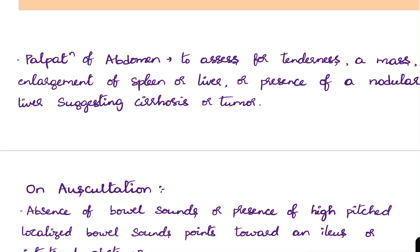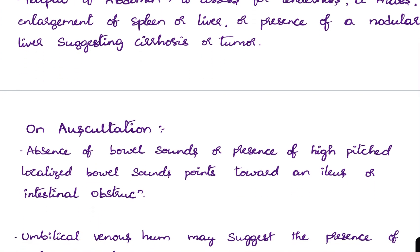Palpation of the abdomen assesses for tenderness. Always stand on the right side of the patient. There are two types of palpation: superficial and deep. If there is tenderness, ask the patient where it is — do not start palpating from that area; begin from the opposite area, assess all areas, and finally approach the area of tenderness. Palpation is also useful for assessing any mass, enlargement of the spleen or liver, or a nodular liver suggesting cirrhosis or tumor.